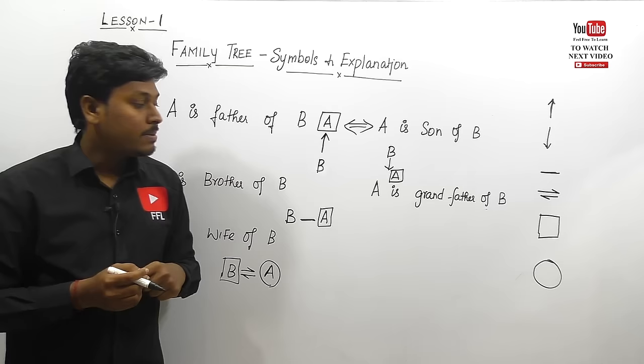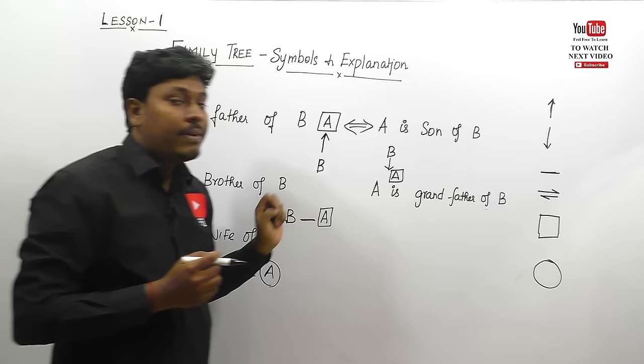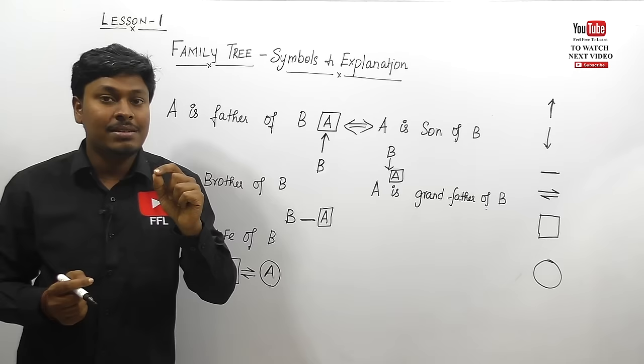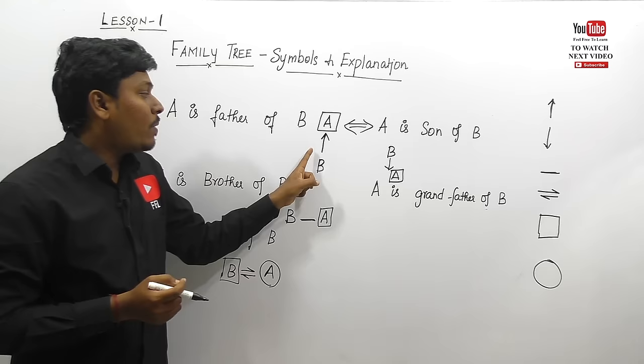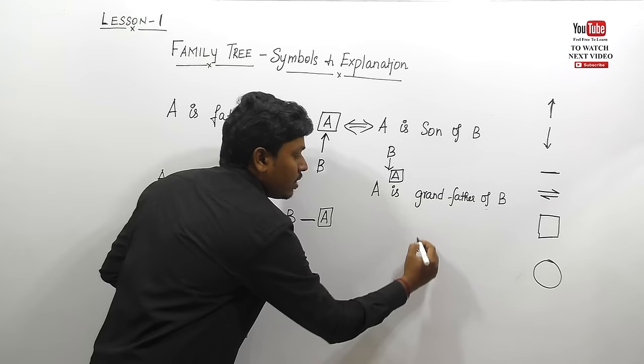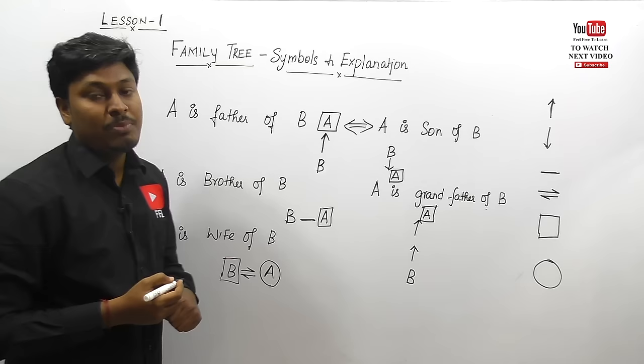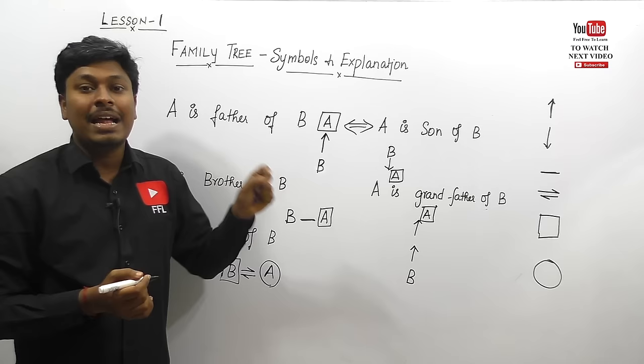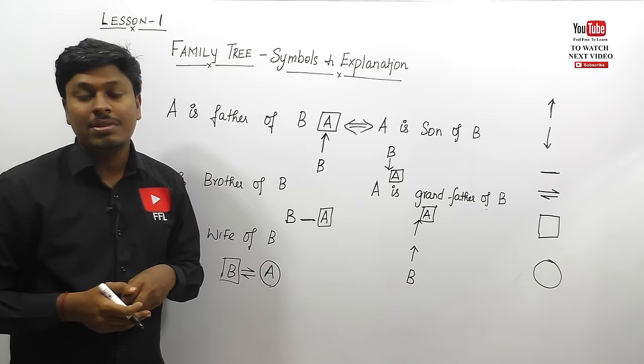A is grandfather of B. B is having a grandfather A. Grandfather is second generation, so we use two up arrow marks. One arrow mark is for one generation, but grandfather needs two arrow marks because grandfather is second generation. A is a male person, denoted by a box.